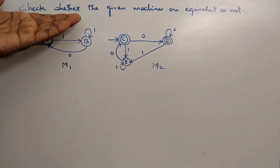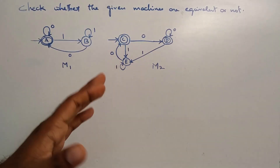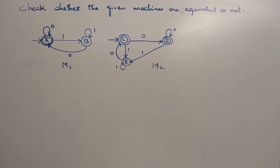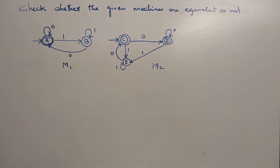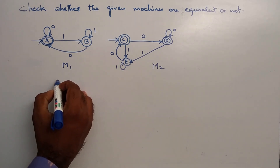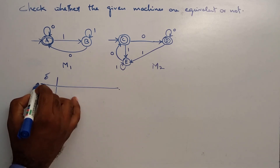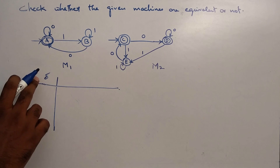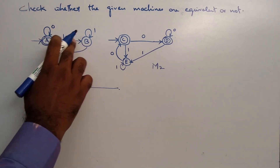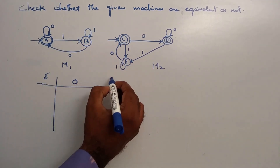If you are given a problem like this — check whether the given machines are equivalent or not — the simplest method is to construct a transition table. We need to check the transition function for inputs 0 and 1 across both machines.